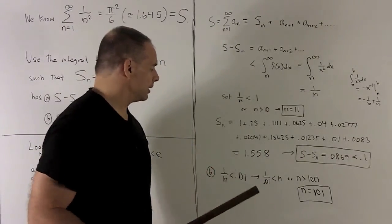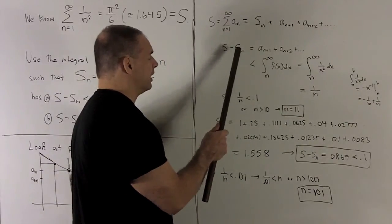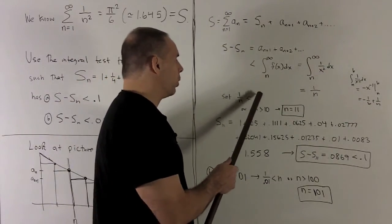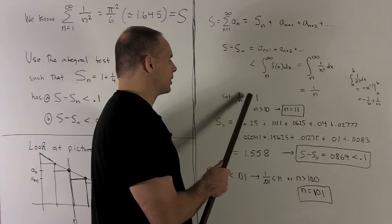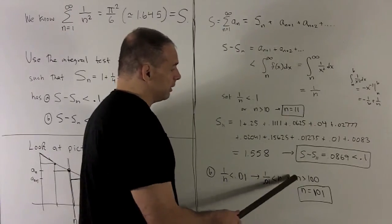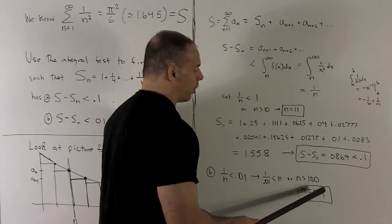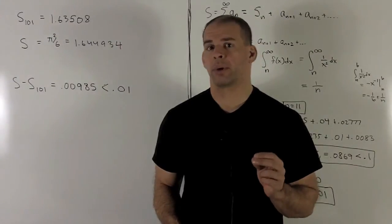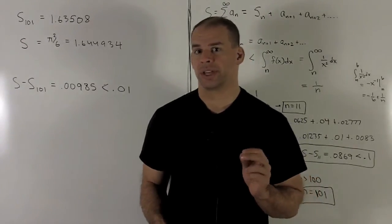All right, for part B, same trickery. We know s minus s sub n, in this case, is going to be less than 0.01. I want it less than 1 over n, and we want 1 over n less than 0.01. So that's going to give me, flipping things over, n bigger than 100. So I'll go with n equal to 101. If we want to go to the numbers, we should do some light programming instead of using a calculator. So let's take a look.